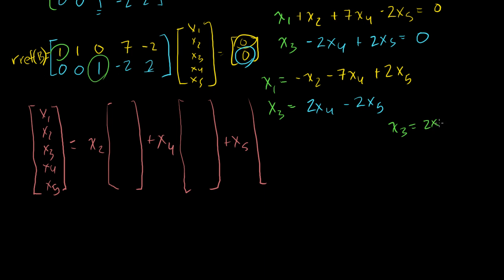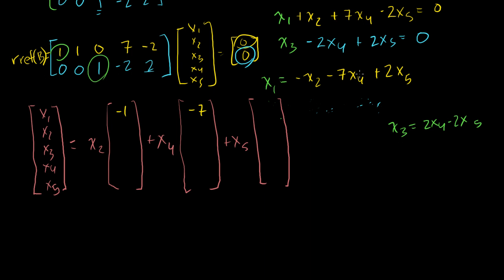So x3 equals 2x4 minus 2x5. Looking at these formulas, x1 equals minus 1 times x2, minus 7 times x4, plus 2 times x5. And x3 equals 2x4 minus 2x5 — it had nothing to do with x2, so it's 0 times x2 for that entry.